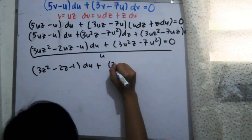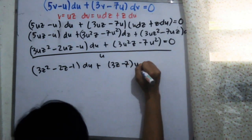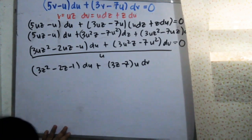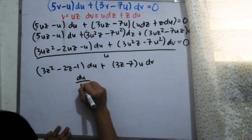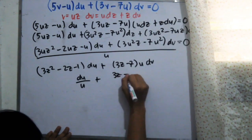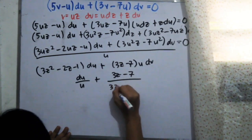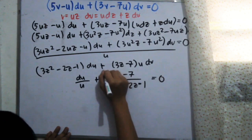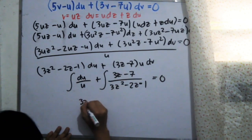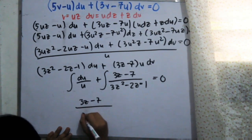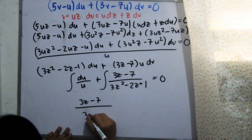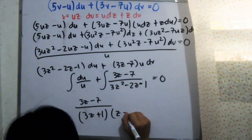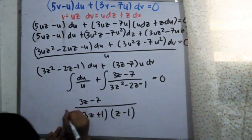By algebraic manipulation we arrive at du over u plus (3uz minus 7) divided by (3uz² minus 2uz minus 1) dz. In this part, u-substitution won't work, so we have to use partial fraction integration, and we need to factor out our denominator.